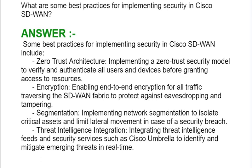Third, Segmentation — implementing network segmentation to isolate critical assets and limit lateral movement in case of a security breach. Fourth, Threat Intelligence Integration — integrating threat intelligence feeds and security services such as Cisco Umbrella to identify and mitigate emerging threats in real time.